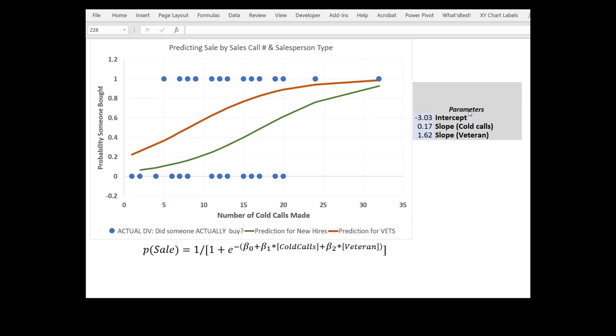So over here on the right hand side I have the parameter for the intercept, that's the beta 0, I have the cold calls parameter, that's our beta 1, and I have the slope for our veteran, that's beta 2. These values are plugged in to the beta 0, beta 1, and beta 2 here, and I've now plotted each one of those into this chart. Our goal is to alter these to get a better sense of what's going on.